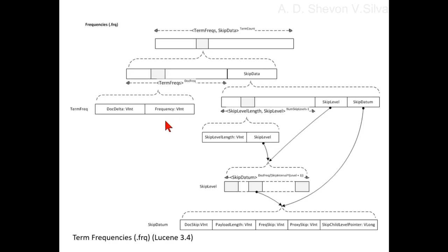When omitTF equals false, we store the term frequency. For example, if the term occurs once in document 7 (doc ID = 7, freq = 1) and 3 times in document 11 (doc ID = 11, freq = 3), we would get the following sequence of vints: 15, 8, and 3.